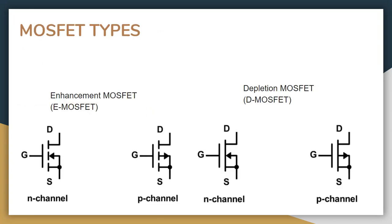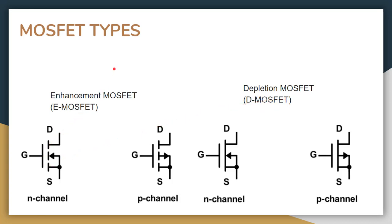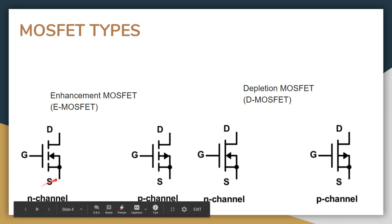There are two types of MOSFET: the Enhancement MOSFET (E-MOSFET) and the Depletion MOSFET (D-MOSFET). Both of these types are further divided into two categories: the N-channel MOSFET and the P-channel MOSFET.